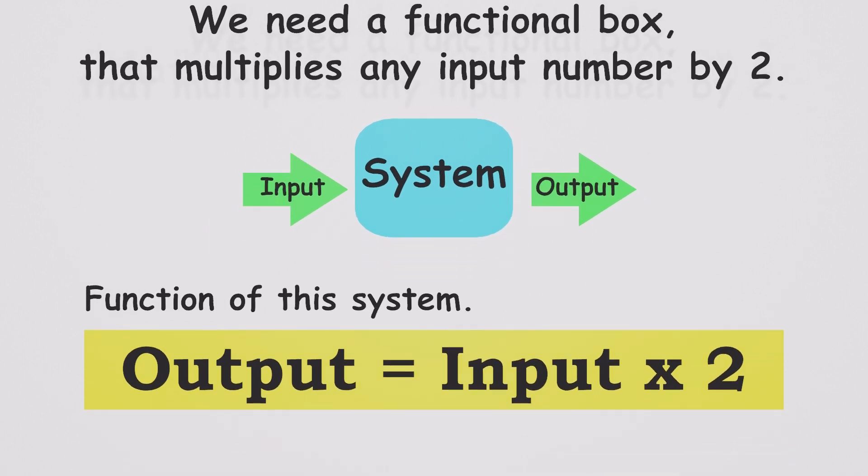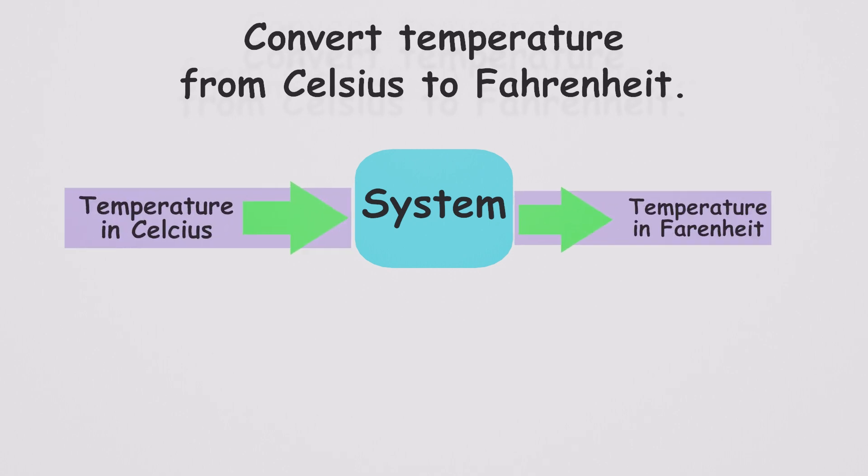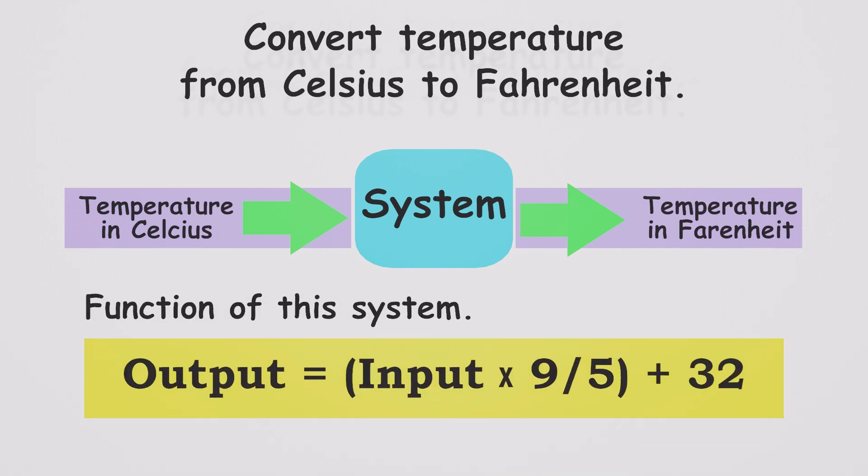Let's talk about another example. Imagine you need to convert temperature from Celsius to Fahrenheit. This is our mathematical machine. When we give it a temperature in Celsius, it gives it in Fahrenheit. The output of this machine can be written as a function, like this.